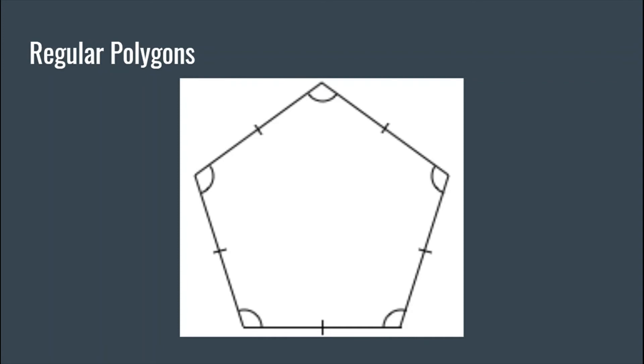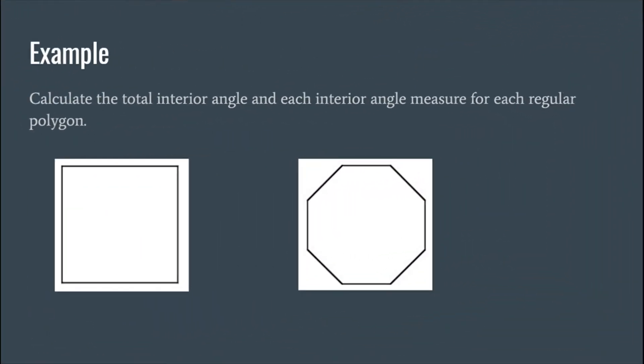Here's an example. We're going to calculate the total interior angle and each individual interior angle measure for each regular polygon. We'll start with this one. This one's got four sides. So remember the formula: 180 degrees times the quantity n minus 2, where n is the number of sides. This polygon has four sides, so n would be 4. 4 minus 2 is 2, 2 times 180 is 360.